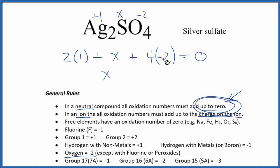X, so this is minus eight plus two is minus six, equals zero. X is going to equal six, positive six. So that's the oxidation number on the sulfur here, plus six.